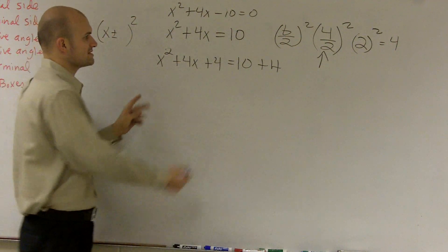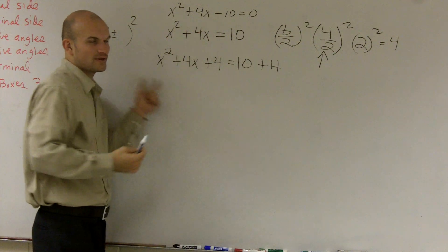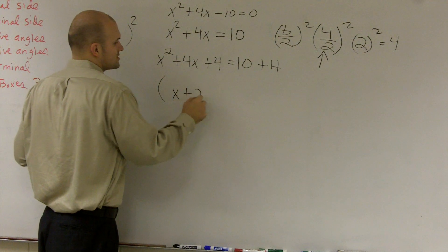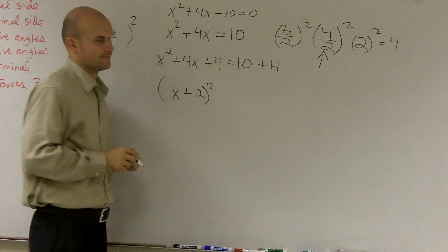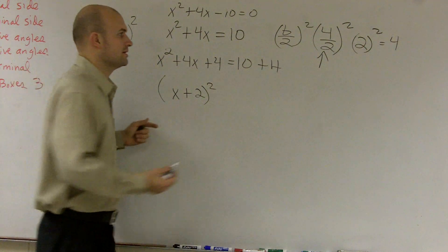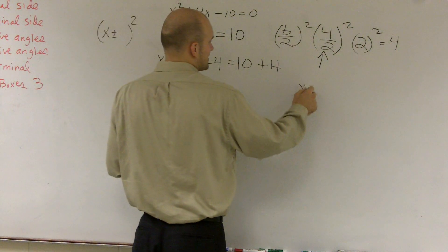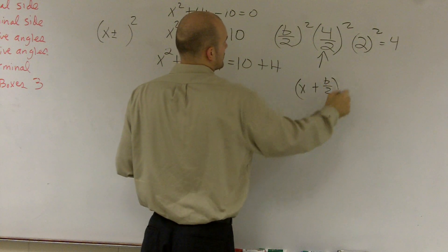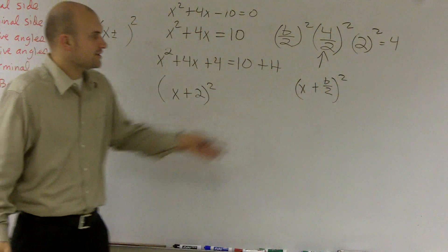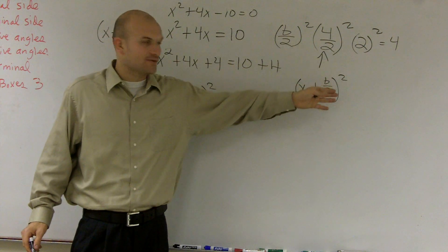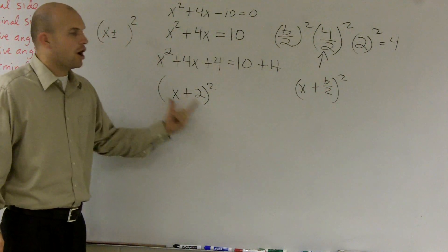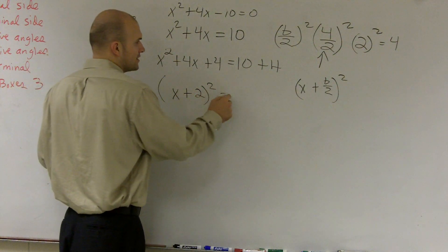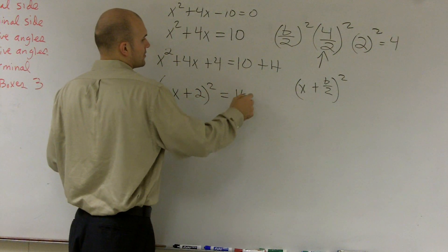Now, what we've done is we've just created a perfect square trinomial. So what we have is x plus 2, squared. And this works every time when you complete the square correctly. Really, all I did was take x plus your b over 2, squared. So you just take x plus whatever your b over 2 is and square it — that will always give you a perfect square trinomial. And that's what's so helpful about this, because now we have x plus 2 squared equals 14.